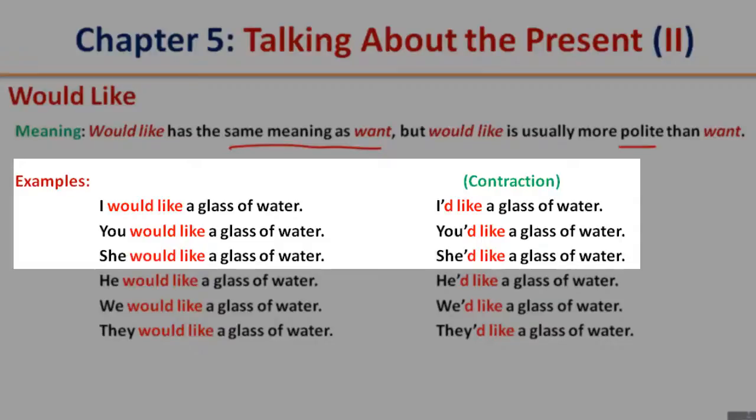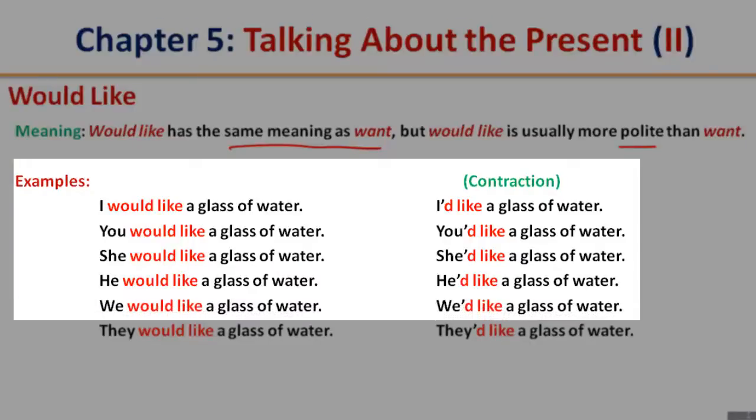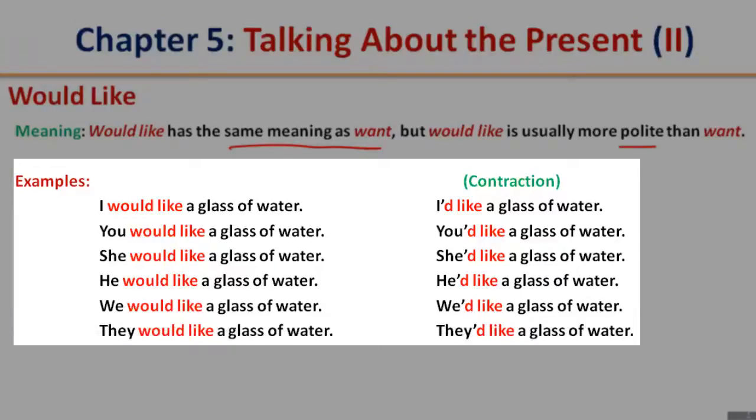She would like a glass of water. The contraction: She'd like a glass of water. He would like a glass of water, the contraction: He'd like a glass of water. We would like a glass of water, the contraction: We'd like a glass of water. They would like a glass of water, the contraction: They'd like a glass of water.